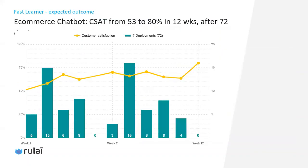Here is an example showing how a fast learner can be quickly improved over time. This is an e-commerce bot we built. It helps customers find tires and answer pre-sale questions, such as inquiries related to promotions, warranty, and products. After we launched the chatbot, we quickly iterated and released 72 new versions in 12 weeks. As a result, the customer satisfaction score improved from 53% to 80%, similar to a human agent's performance.